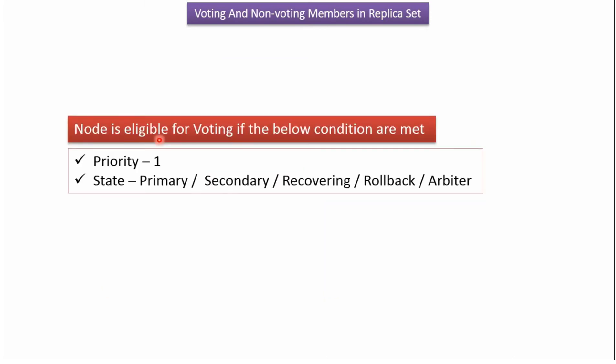In a replica set, a particular node is eligible for voting if the below conditions are met. Condition 1 is priority should be 1, and condition 2 is the state should be primary, secondary, recovering, rollback, or arbiter.